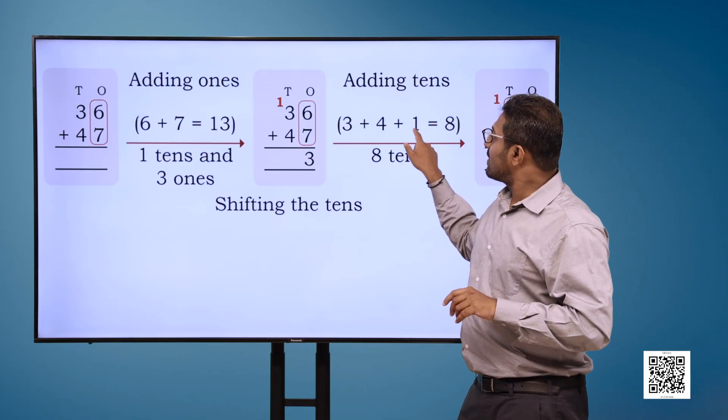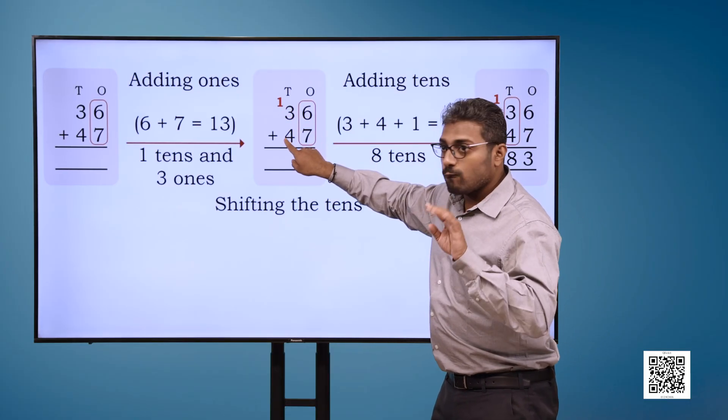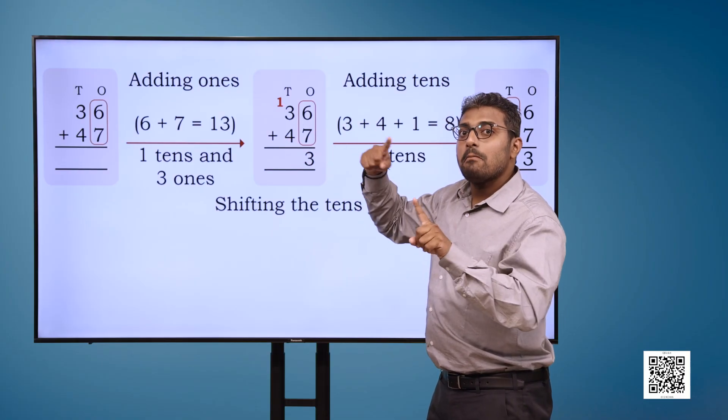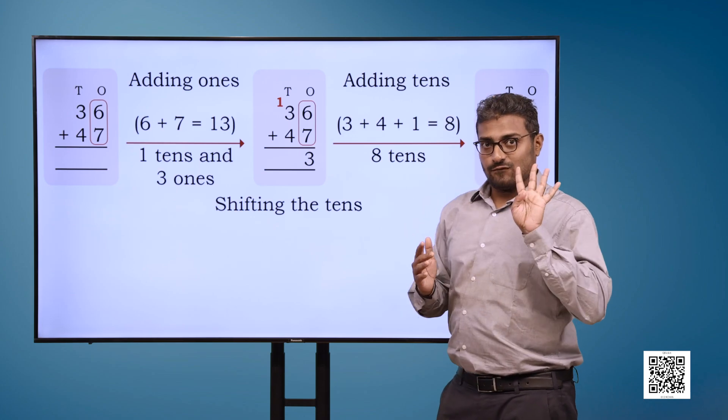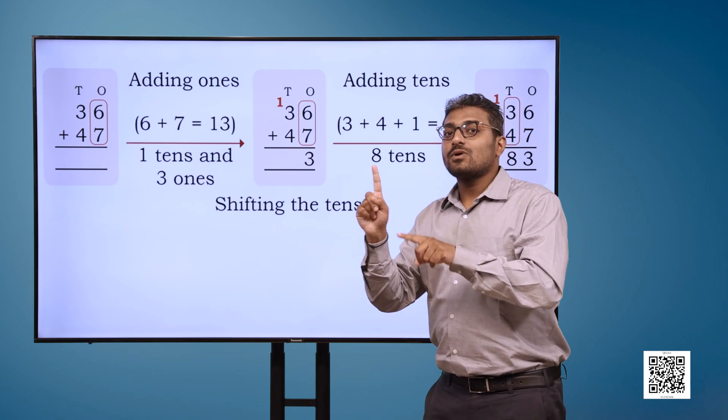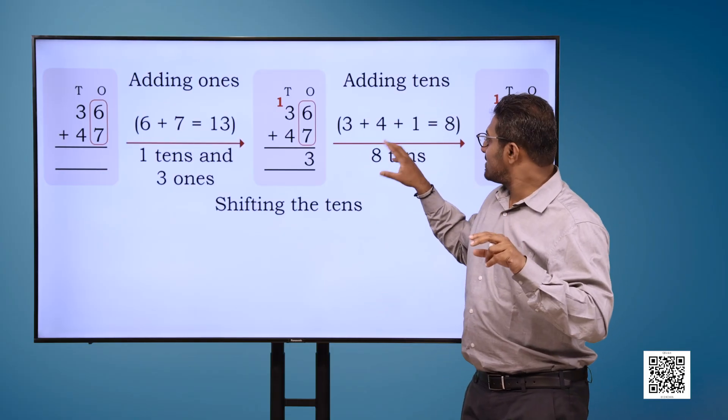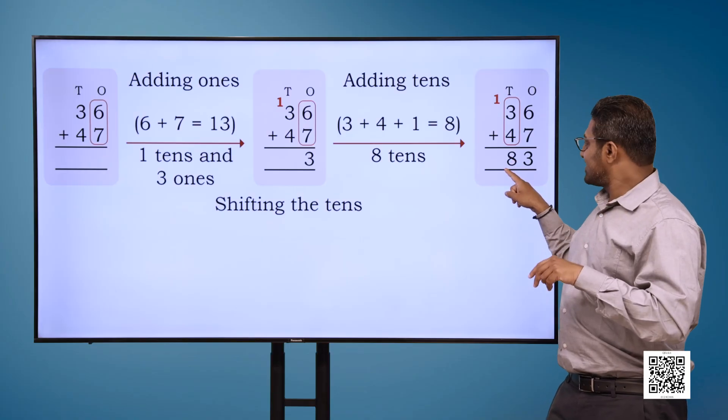Now, adding tens. 3 plus 4 plus 1 is equal to 8, which means 8 tens. That is, 36 plus 47 is equal to 83.